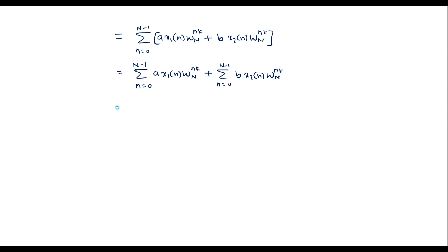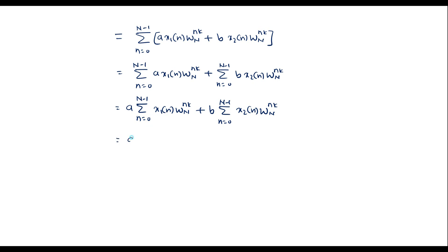Here a is a constant, so I take it out of the summation: a times the summation from n equals 0 to N minus 1 of x1 of n·W_N power nk, plus b — which is also constant — times the summation from n equals 0 to N minus 1 of x2 of n·W_N power nk. At the beginning we considered that the DFT of x1 of n is x1 of k. Therefore, this summation is nothing but a·x1 of k plus b·x2 of k, which is the DFT of x2 of n. Thus, the DFT of a·x1 of n plus b·x2 of n equals a·x1 of k plus b·x2 of k, and the linearity property is proved.